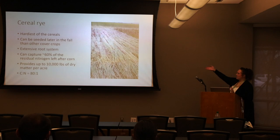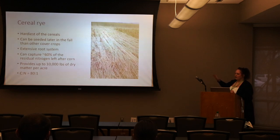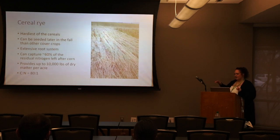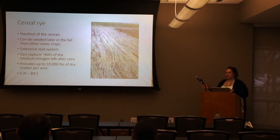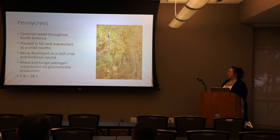Cereal rye grows a large amount of dry matter, so when terminating it you need to be mindful of how much biomass you leave on the soil — there are pros and cons to various amounts. This plant has a very high carbon-to-nitrogen ratio of 80:1, so it decomposes really slowly but can put a lot of carbon back into the soil over time.